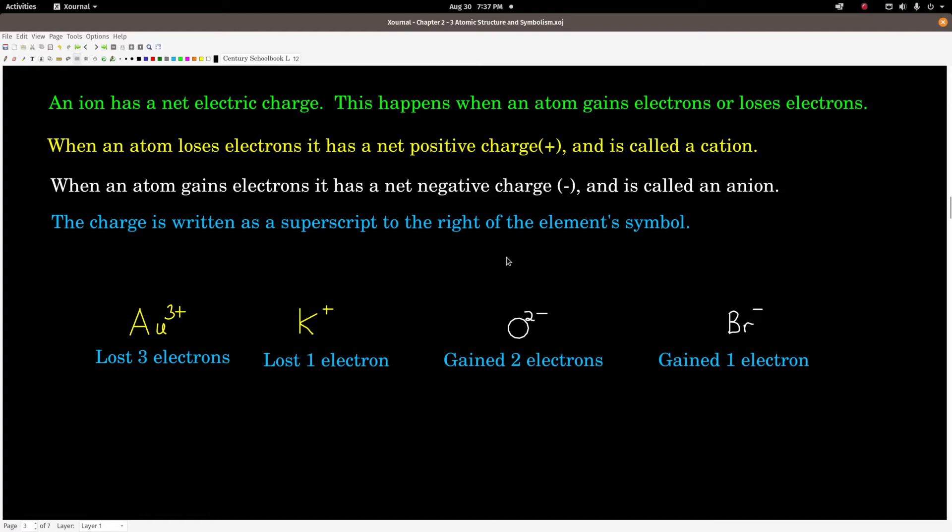When we have ions, we write the charge as a superscript to the right of the element symbol. For example here, gold 3 plus. This is gold. AU is gold. The 3 plus tells us that relative to a neutral atom of gold, this ion has 3 fewer electrons. It lost 3 electrons because it has a total of 3 positive charges. This is potassium. We don't write the 1. It's implied. Potassium with a plus 1 charge means it lost 1 electron. This is the oxide ion, an oxygen atom with 2 extra electrons. We know it has 2 electrons because it has a negative 2 charge. It gained 2 electrons. And once more, we don't write the 1. This is the bromide ion. It has 1 extra electron compared to a neutral bromine atom.